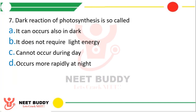Question 7. Dark reaction of photosynthesis is so called because — option A: It can occur also in the dark, option B: It does not require light energy, option C: It cannot occur during the day, or option D: It occurs more rapidly at night. The correct answer is option B — it does not require light energy.